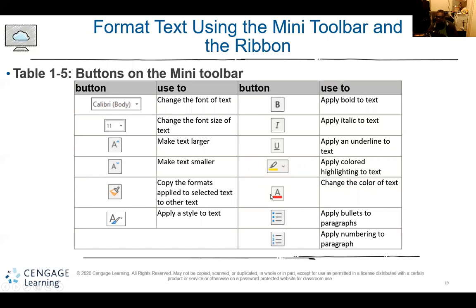The mini toolbar has several buttons. You can change the font size, make text larger or smaller. You also have the ability to copy the format applied to selected text and apply it to a different piece of text. You can apply a style to the text, and there are the usual options: bold, italic, and underline. You can also highlight text, change the text color, and add bullets. These are all the buttons on the mini toolbar and they do come in handy.